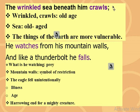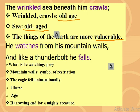The next stanza starts with: 'The wrinkled sea beneath him crawls.' Pay attention to the words 'wrinkled' and 'crawls' — both associate with old age. The sea is old, aged, and decrepit. Through this line the poet wants to convey the idea that the things of the earth are more vulnerable and in imminent danger of dying and decaying.